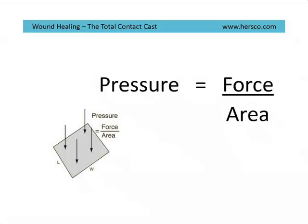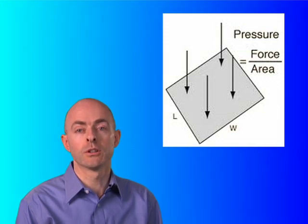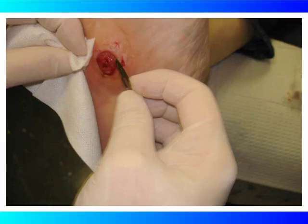There are two concepts that we have to consider when we're trying to offload open wounds. The first is pressure and the second is shear. Pressure from our classes in physics is defined as force divided by area. So quite simply, if we can reduce the force or the loading on the plantar aspect of the foot, or we can increase the total contact area to spread that force over a greater surface, we'll have a chance of reducing the pressure and helping to close the wound.